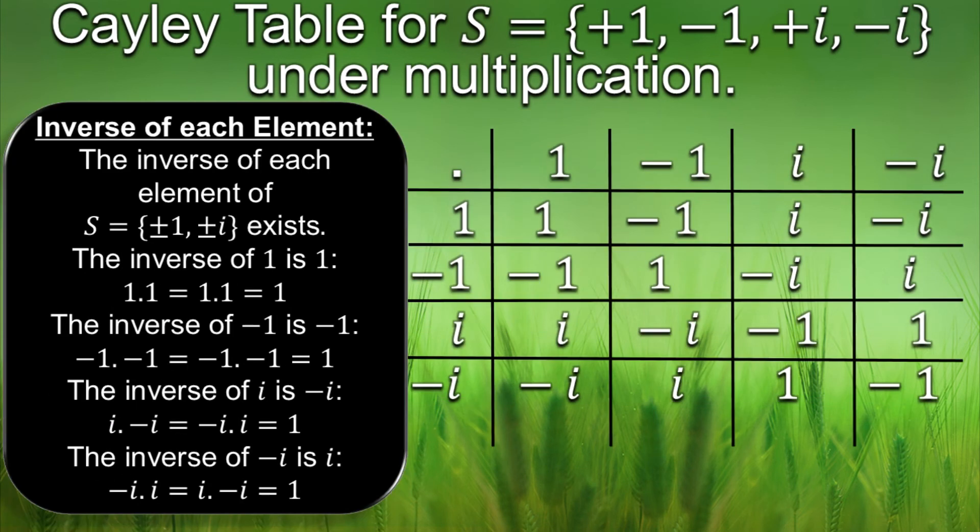Fourth and last axiom of a group is existence of inverse of every element and guess what we find inverses by using Cayley table. What a surprise. So we look for the elements that give identity 1 on multiplying. So those elements are the inverses of each other. So we can see that all the elements of S have inverses in S.